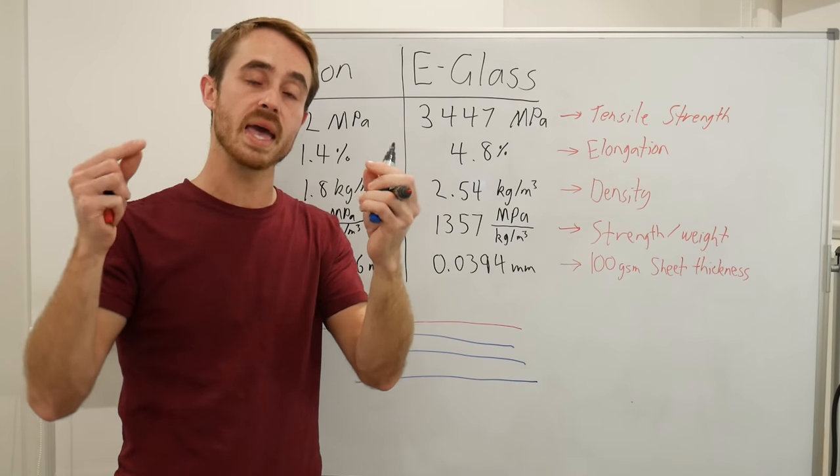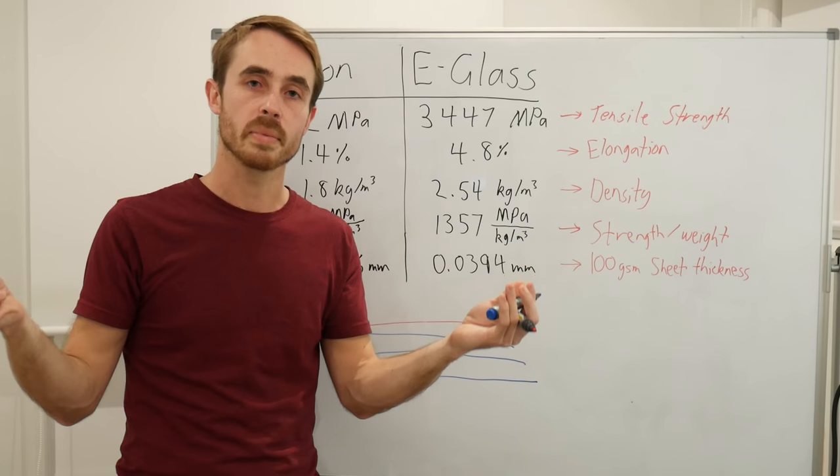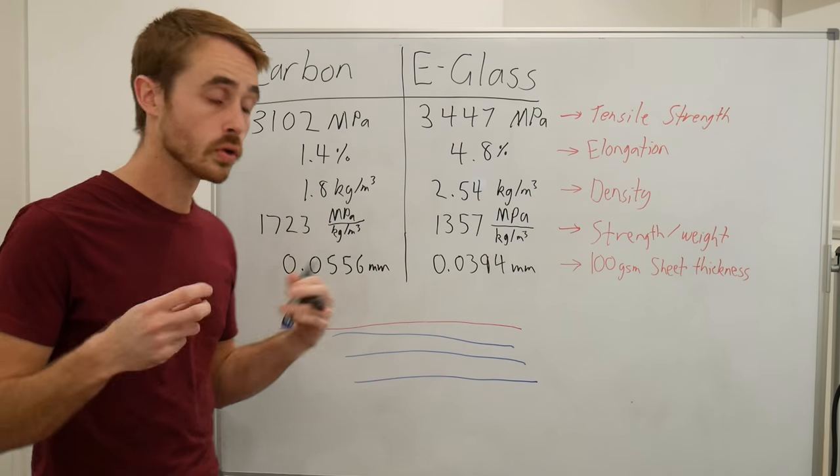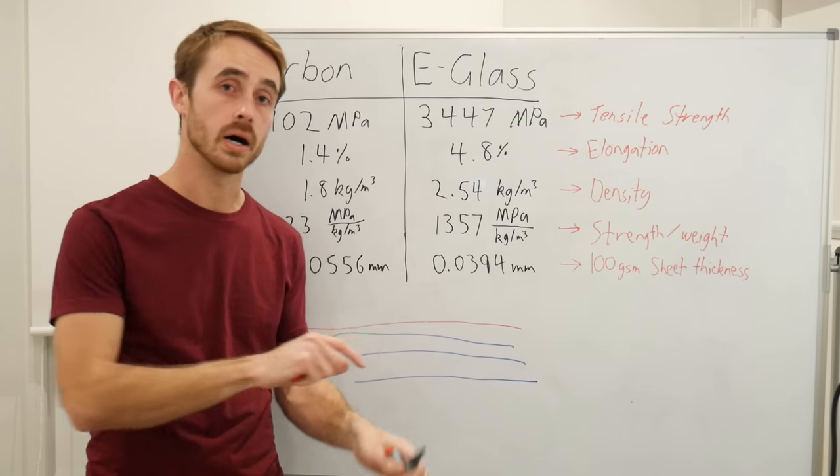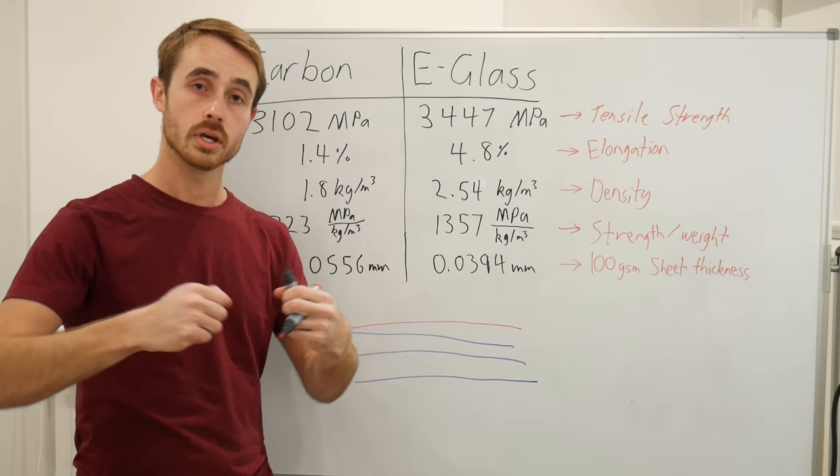Imagine you put a rubber band on the outside of a piece of aluminum and bent it. The rubber band is not going to take any force at all. So the rubber band in our case is the fiberglass. You could break that carbon fiber long before you break the fiberglass just by pulling it.